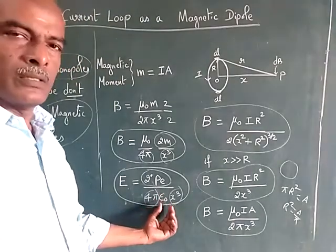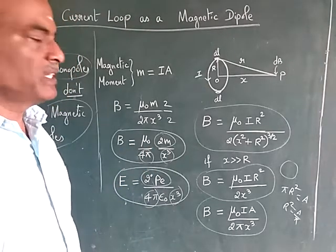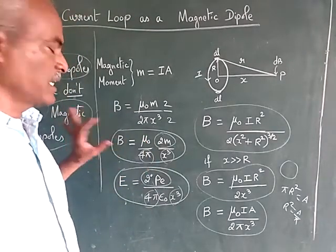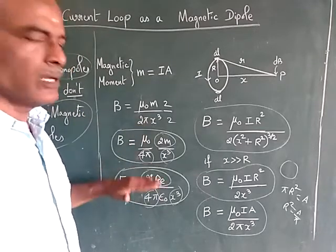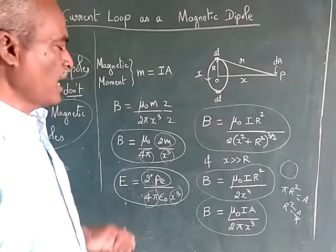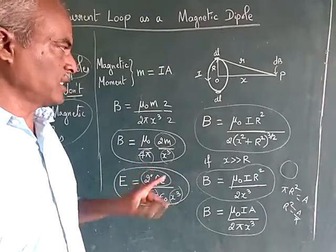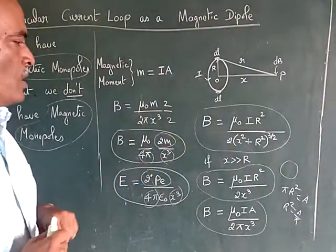The epsilon naught permittivity is in the denominator, whereas permeability of free space is in the numerator in the case of magnetic flux density. So therefore, there is a big correlation between electric field and magnetic field. So remember this formula, it will be very easy. That's why we do multiplication by 2 and divide it by 2.